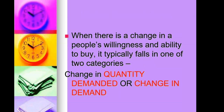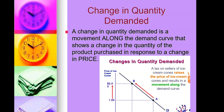When there is a change in people's willingness and ability to buy, it typically falls into one of two categories: change in quantity demanded or change in demand. A change in quantity demanded is a movement along the demand curve that shows a change in the quantity of the product purchased in response to a price change.